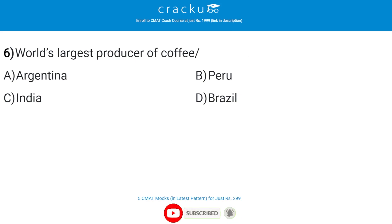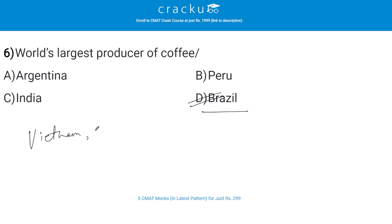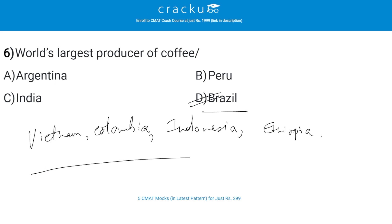Which country is the largest producer of coffee? The correct answer is D — Brazil. More than 70 countries produce coffee, but the top five producers are: Brazil, Vietnam, Colombia, Indonesia, and Ethiopia.